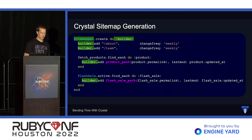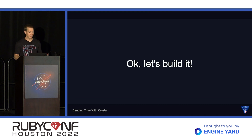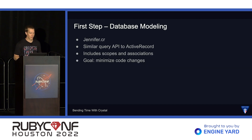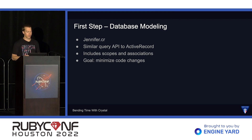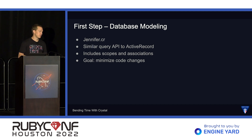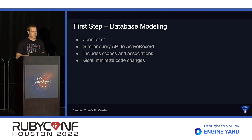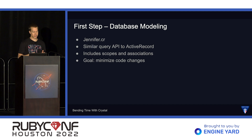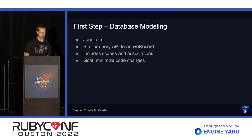Now we just have to build a prototype. The first thing we're going to look at is the database modeling. We will be using the Crystal shard Jennifer to accomplish this. It has a similar query API to Active Record, and it includes scopes and associations. Our goal is to minimize changes to the sitemap generation code, so we will set up our data models similarly to how they have been in Rails.